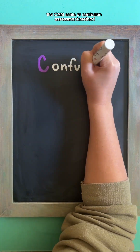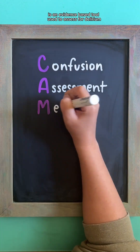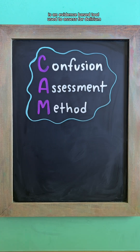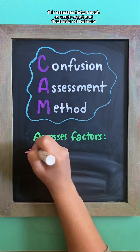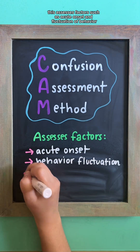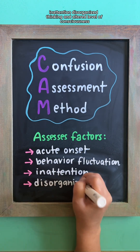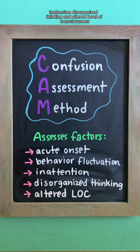The CAM scale, or Confusion Assessment Method, is an evidence-based tool used to assess for delirium. This assesses factors such as acute onset and fluctuation of behavior, inattention, disorganized thinking, and altered level of consciousness.